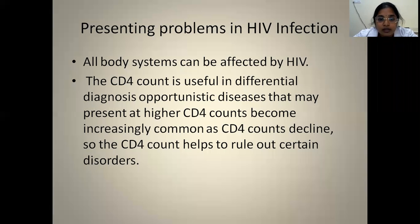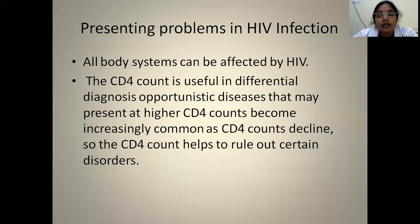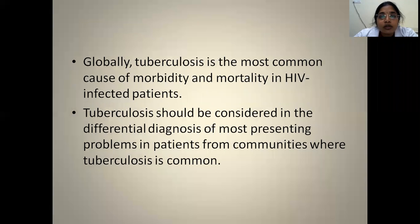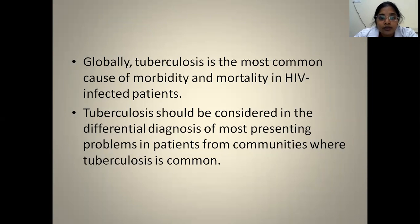CD4 count is useful in the differential diagnosis of various opportunistic infections. Infections that may present at higher CD4 counts become increasingly common as counts decline. TB is the most common cause of morbidity and mortality in HIV individuals and should be considered as a differential in most presenting problems, especially if the patient is from low socio-economic areas.